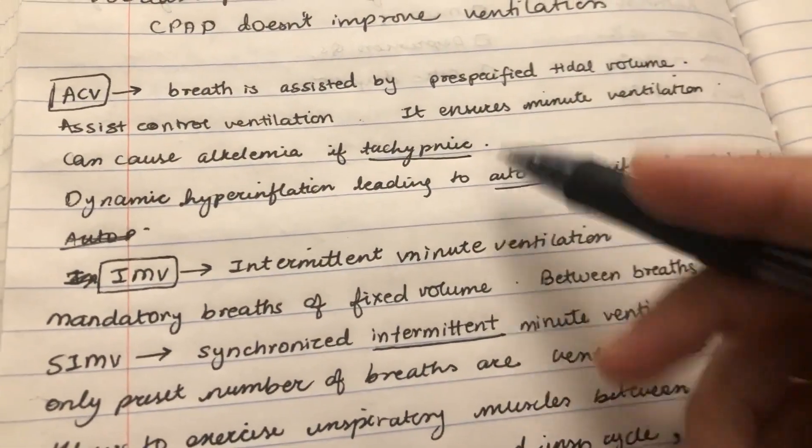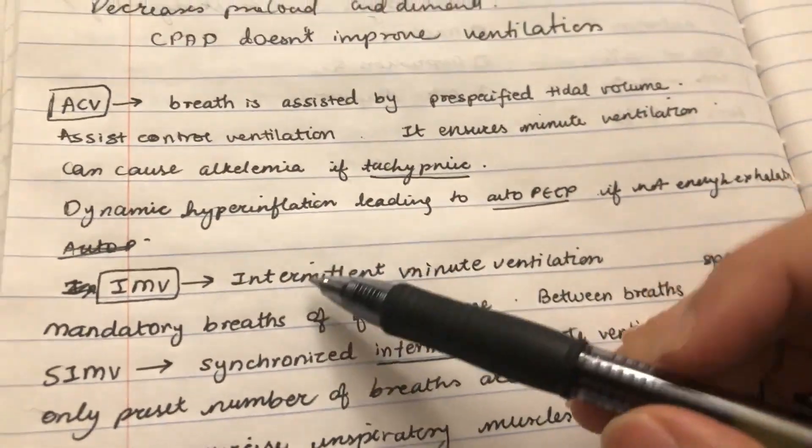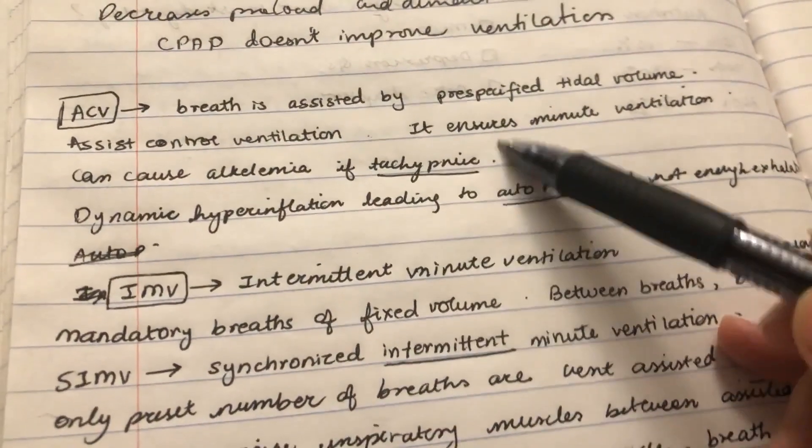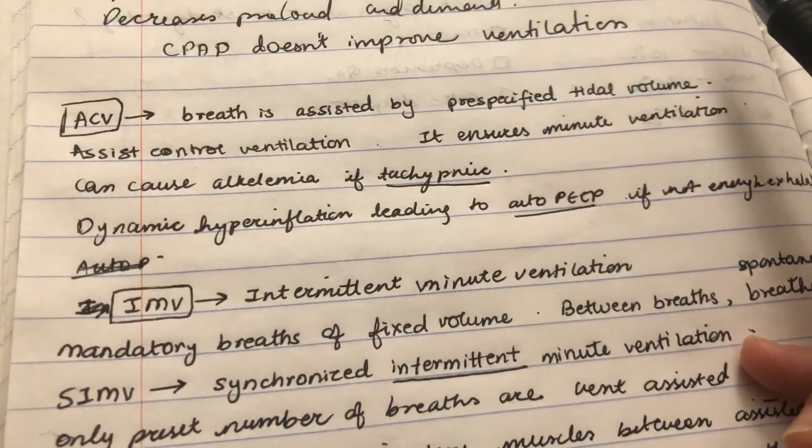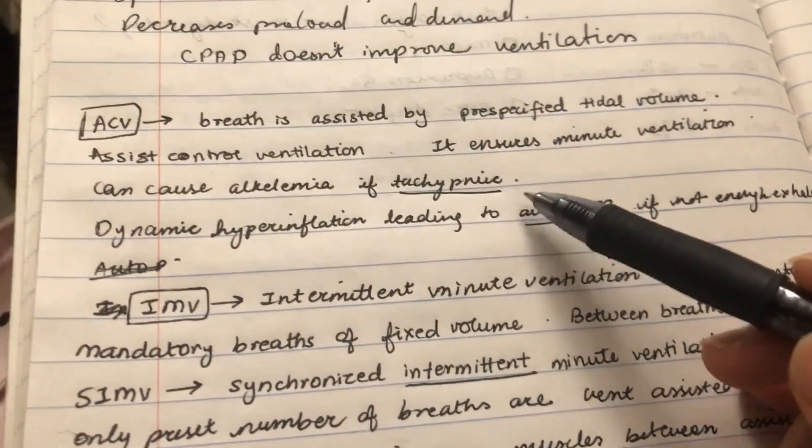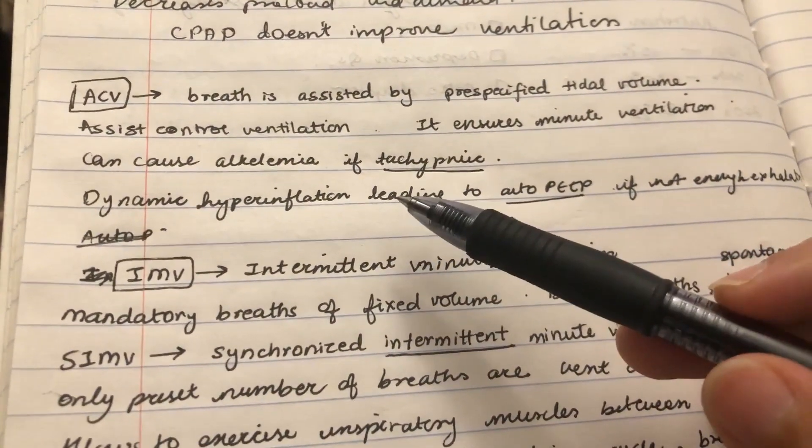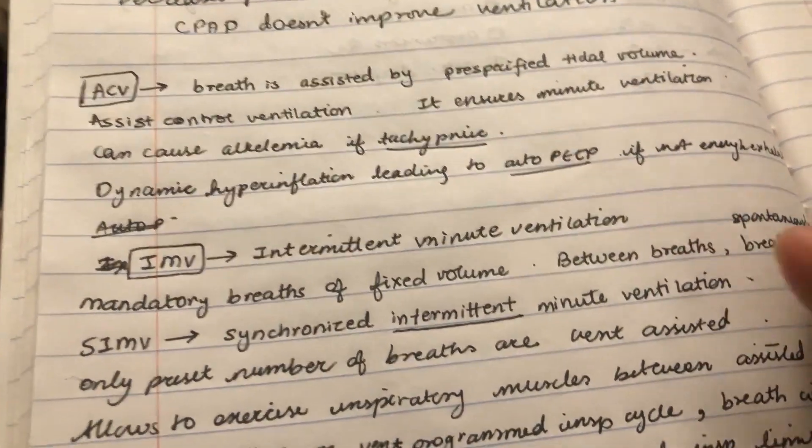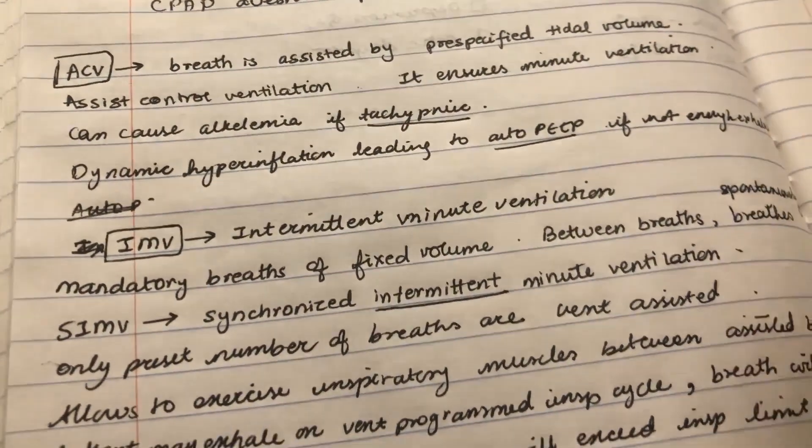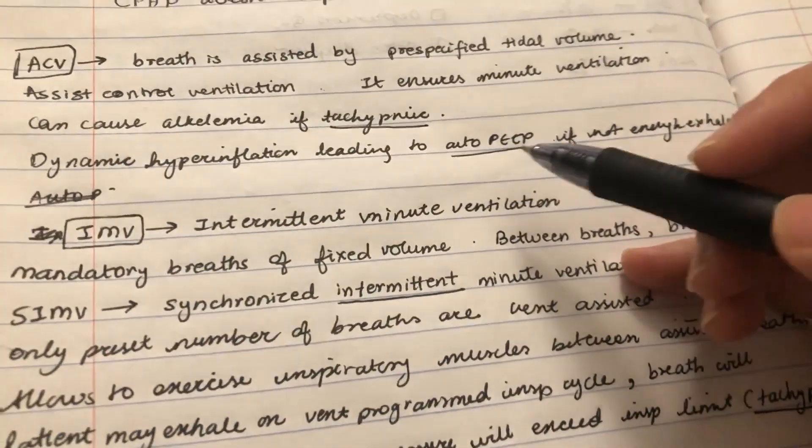It ensures minute ventilation. If there is volume, then the ventilation will be fine. The drawbacks are that if there is a lot of breaths or ventilation, you can probably have alkalemia. If there is a lot of breath in lungs, and if there is air trapping or hyperinflation, then it will be auto-PEEP.